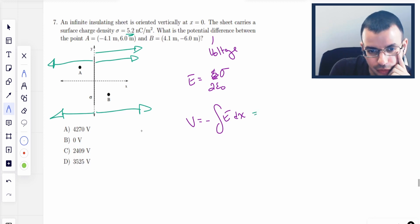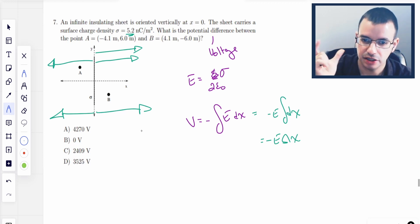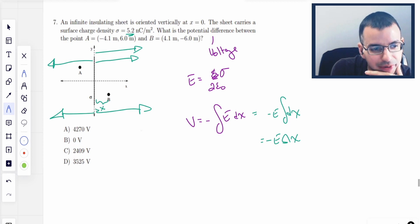And since it's uniform, we can rewrite this as negative e dx, which becomes negative e delta x, because the integral of dx just is x. And so I wrote delta x not to be a small difference, but just between the beginning point and the end point. So this distance right here, that'll be delta x.